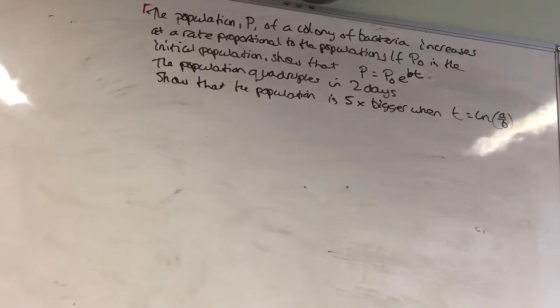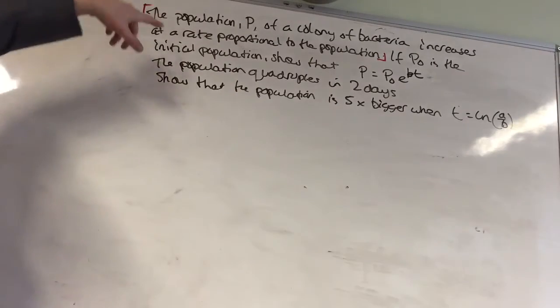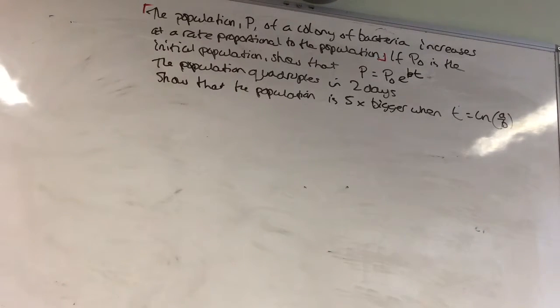So, the first bit we need to do is try to make sense of that thing there, that red sentence. The population P of a colony of bacteria increases at a rate proportional to the population. How are we going to write that down? What do you think, Katie?